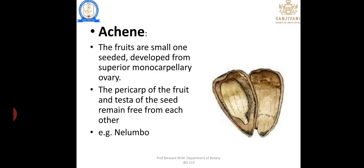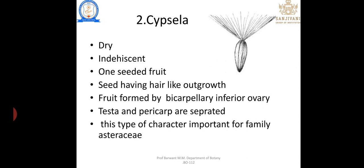Types of simple indehiscent fruit: Achene — the fruit is small, one-seeded, developed from a superior monocarpellary ovary; the pericarp and testa remain free from each other. Cypsela — a dry indehiscent one-seeded fruit having hair-like outgrowths, formed from a bicarpellary inferior ovary; testa and pericarp are separated. This character is important for the family Asteraceae.